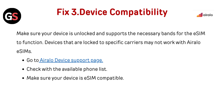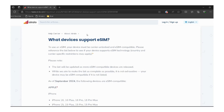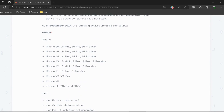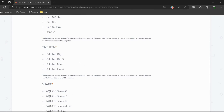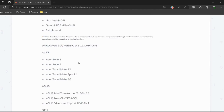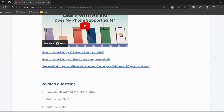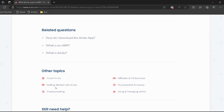Fix 3: Device compatibility. Make sure your device is unlocked and supports the necessary bands for the eSIM to function. Devices that are locked to specific carriers may not work with Airalo eSIMs. Go to the Airalo device support page — I have provided the link in the description. Check the available phone list and make sure your device is eSIM compatible.